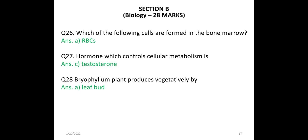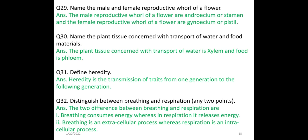Now comes the biology part, Section C. The first three questions are MCQs. MCQ answers: the correct answer for cells formed in bone marrow is herbicides (RBCs). The hormone which controls cellular metabolism is testosterone. Bryophyllum plants reproduce vegetatively by leaf bud. Question: Name the male and female reproductive parts of a flower. The male reproductive part is the androecium or stamen. The female reproductive part is the gynoecium or pistil.